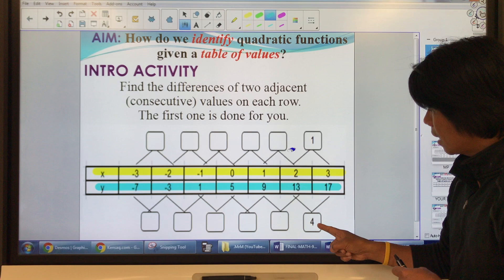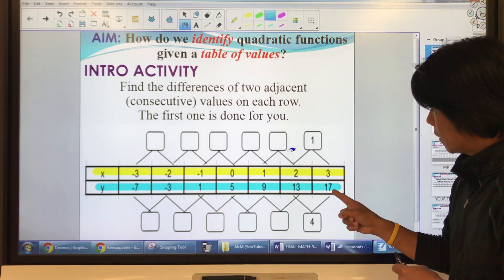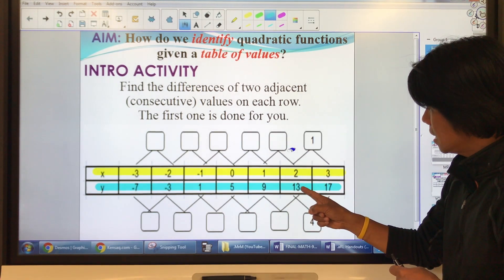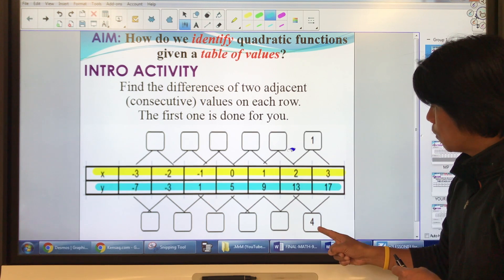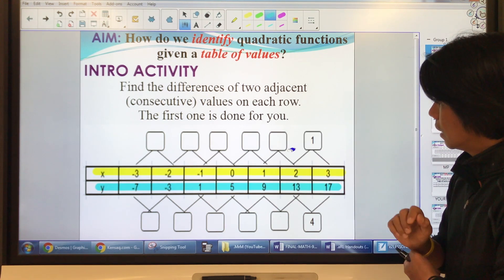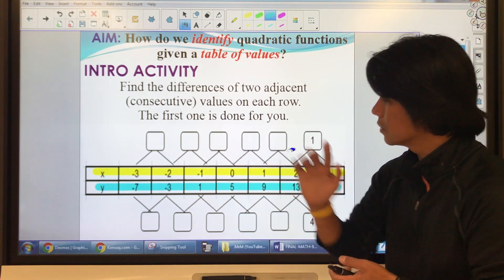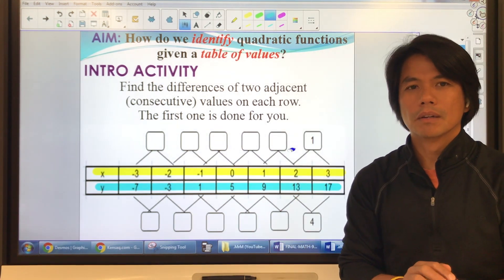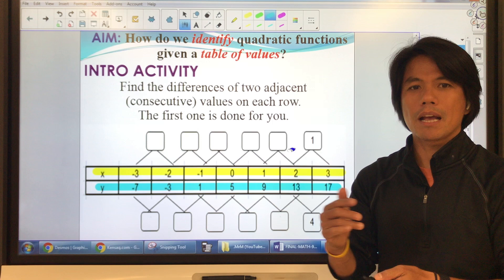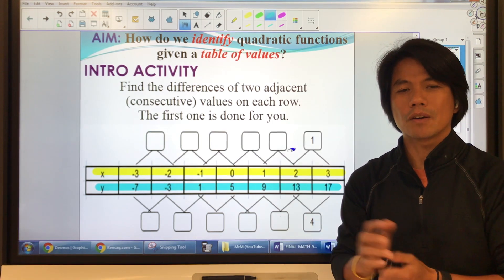How about this? How did I get 4? 17 minus 13 equals 4. So how do you get the next value here and here and here? Make sure you pause your video while you're doing it. Come back once you're done so that you can check your answers.